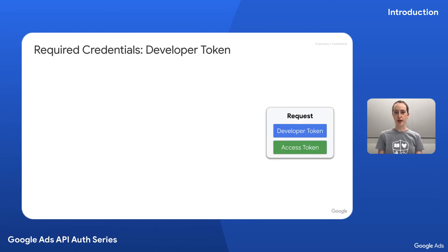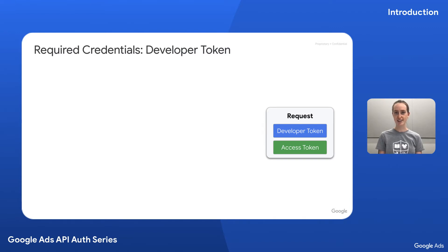I'm going to run through the OAuth flow process twice. First, we'll work our way backwards, starting with what you'll ultimately need to make a request. Then we'll walk through the full process from beginning to end. You'll need two pieces of information to make a request with the Google Ads API: a developer token and an access token.